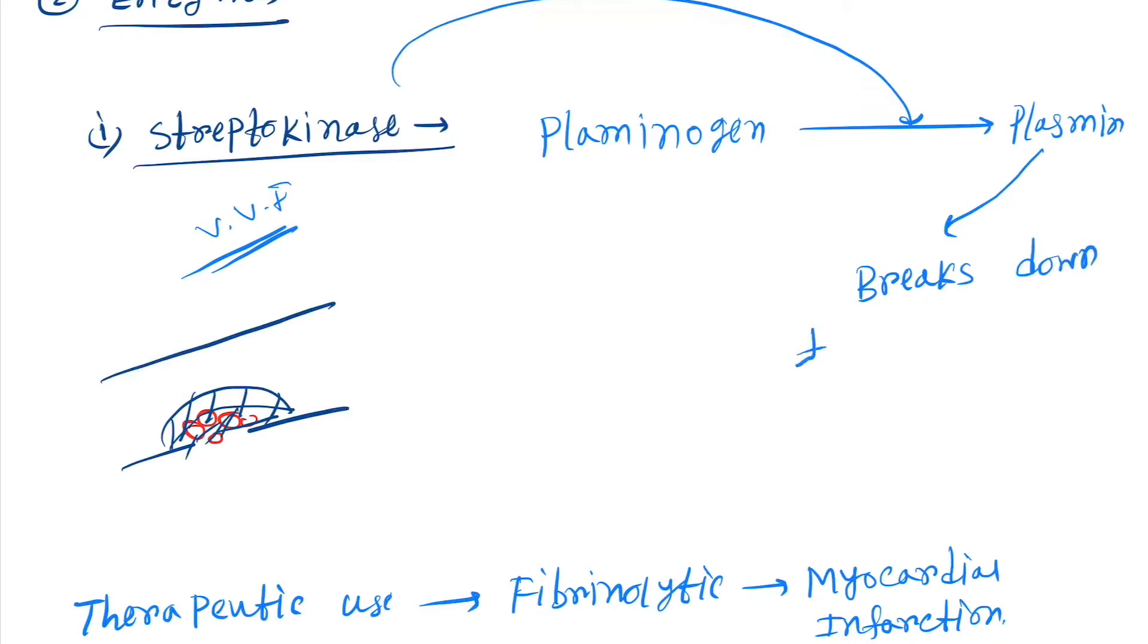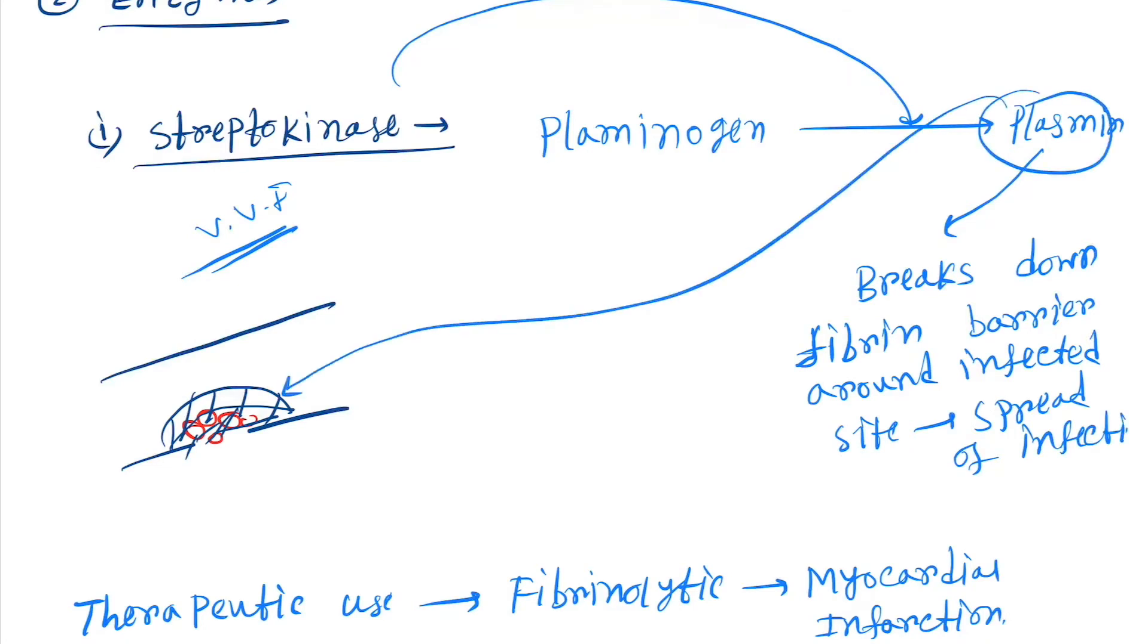breakdown of fibrin barrier, the barrier around infected site, which causes spread of infection. So this plasmin will act on this fibrin net and as a result everything will spread.